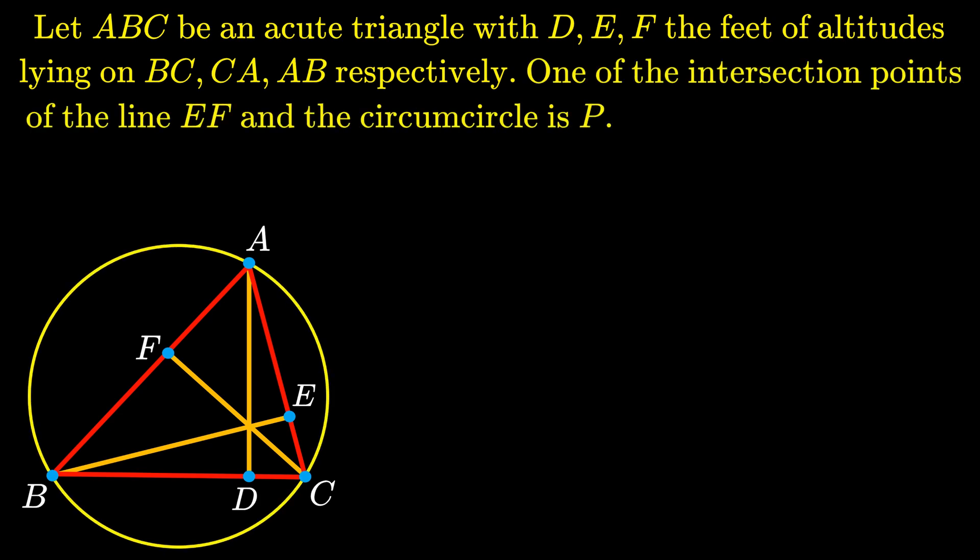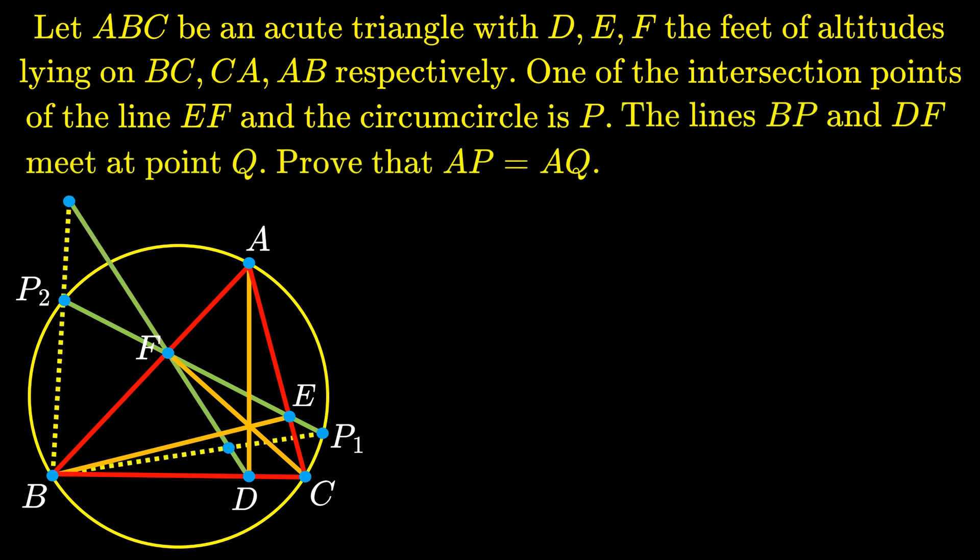One of the intersection points of the line EF and the circumcircle is P. The lines BP and DF meet at point Q. We want to prove that the length AP is equal to the length AQ.